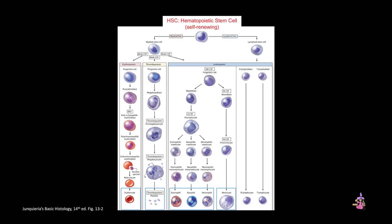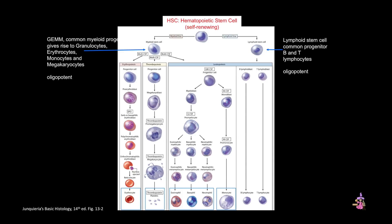Here's our more complicated diagram of hematopoiesis. At the top, we see that self-renewing hematopoietic stem cell, which gives rise to two major lineages. These lineages are more restricted — now considered oligopotent, making a few different cell types. First, the lymphoid stem cell is the common progenitor of B and T lymphocytes. On the myeloid side, the GEMM cell — or common myeloid progenitor — gives rise to the granulocyte, erythrocyte, monocyte, and megakaryocyte lineages. Following each lineage vertically shows the final mature cell types; for example, the erythrocyte lineage eventually gives rise to the red blood cell. The myeloid stem cell further gives rise to a granulocyte-monocyte progenitor, which ultimately generates neutrophils, basophils, eosinophils, and monocytes — all cells that essentially contain granules.